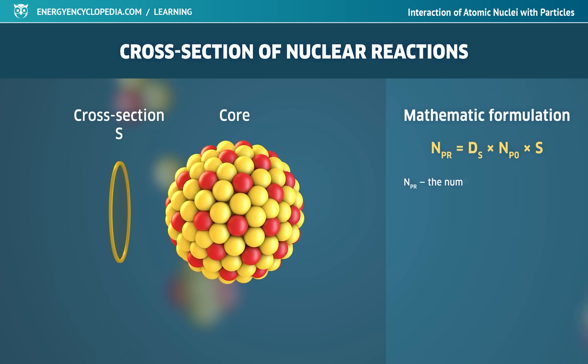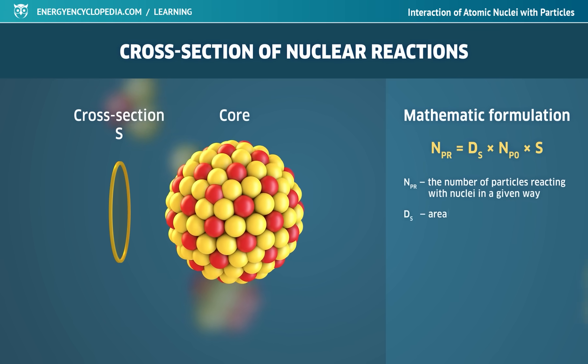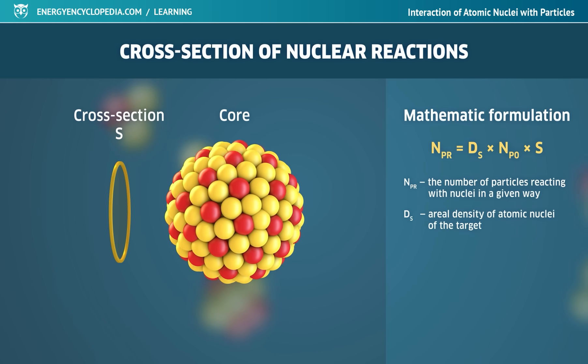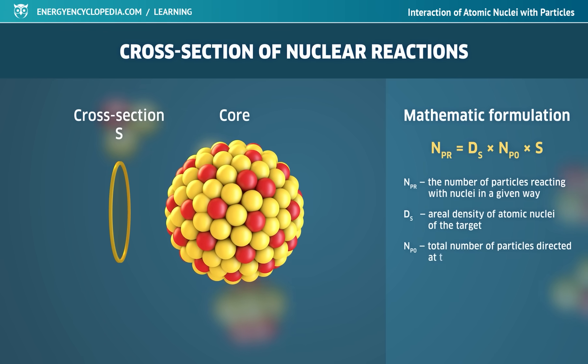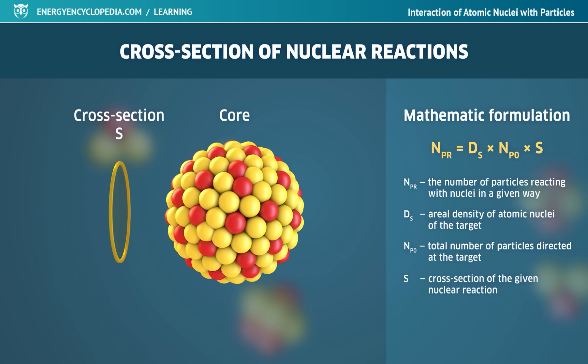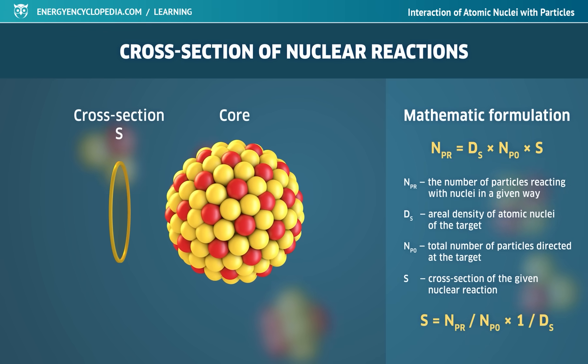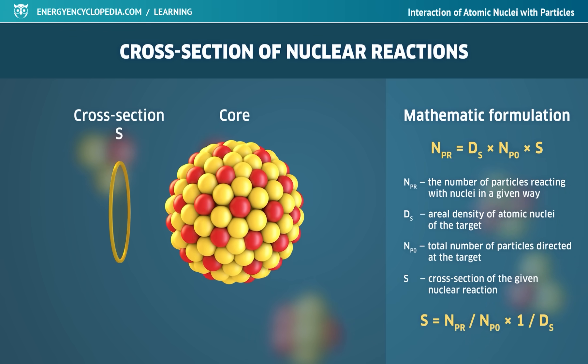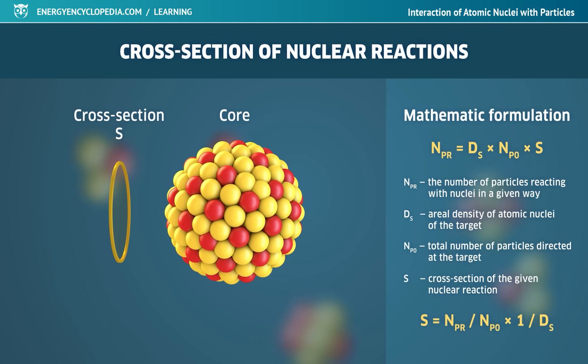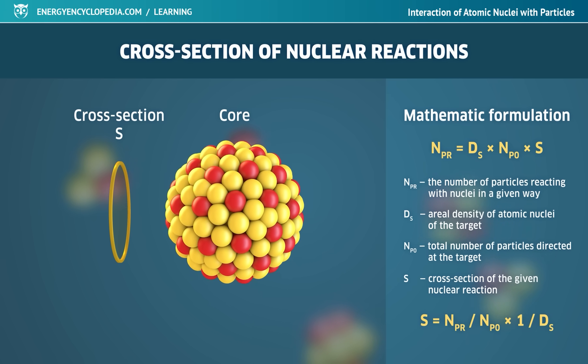Mathematically, the number of particles reacting with nuclei in a given way can be expressed as the product of the surface density of the atomic nuclei of the target substance, the total number of particles directed at the target and the cross-section of the given nuclear reaction. It follows that the nuclear reaction cross-section is given by the ratio of the number of nuclear reactions to the total number of bombarding particles, multiplied by the reciprocal of the surface density of nuclei in the target substance.